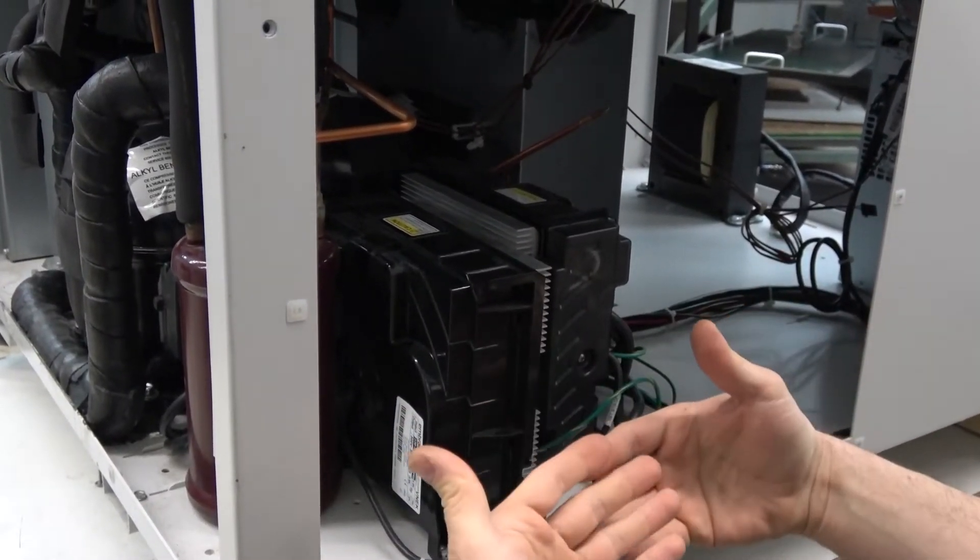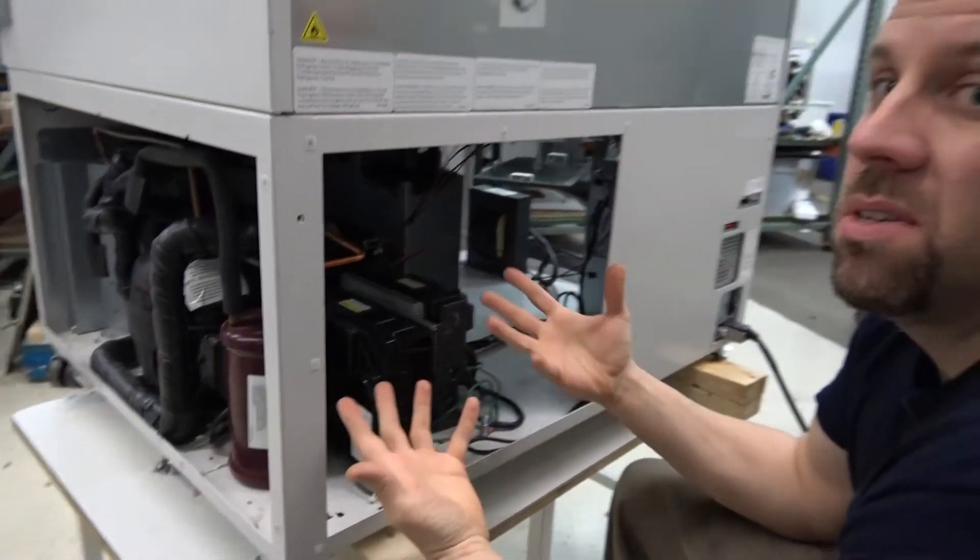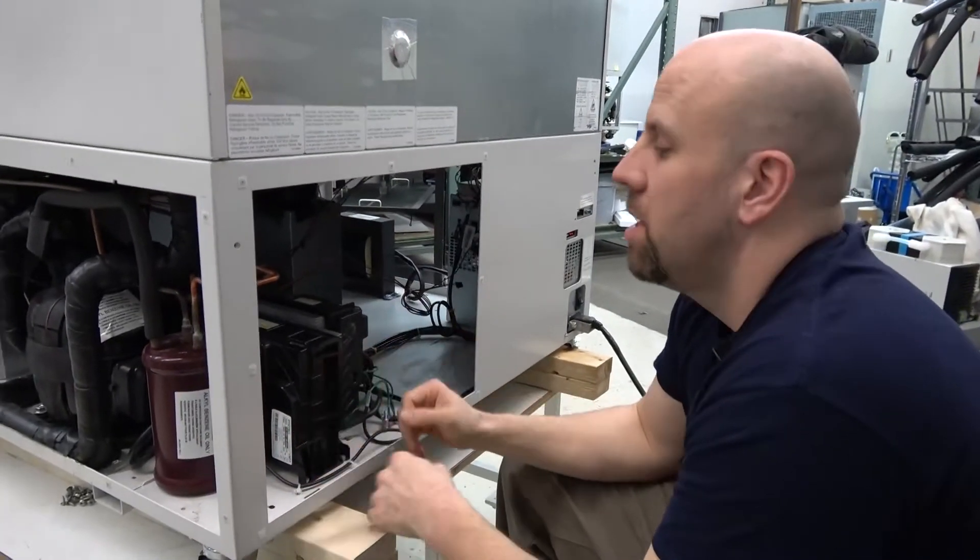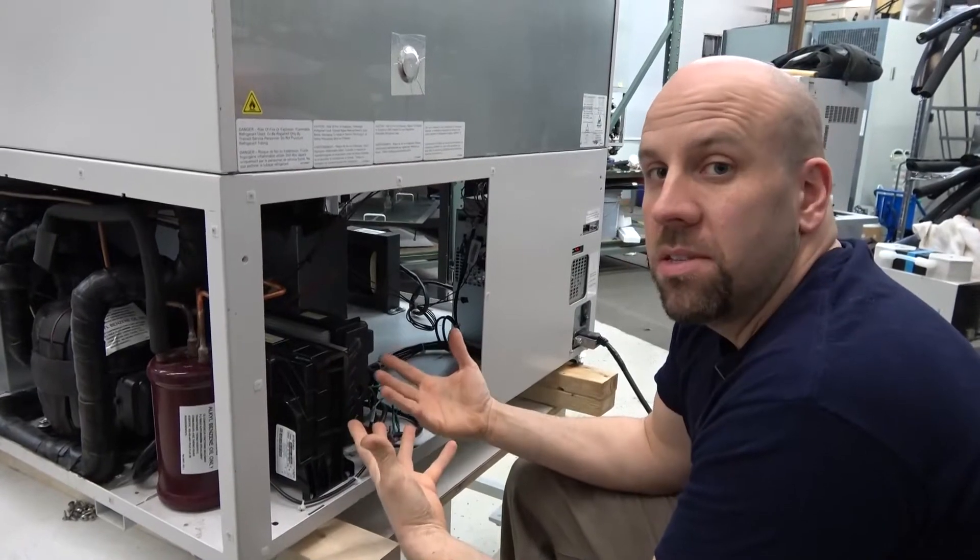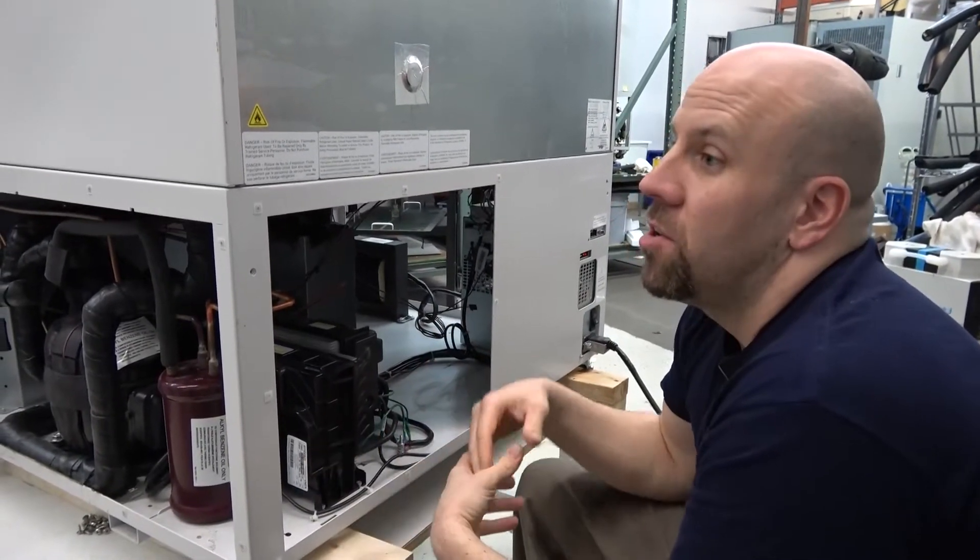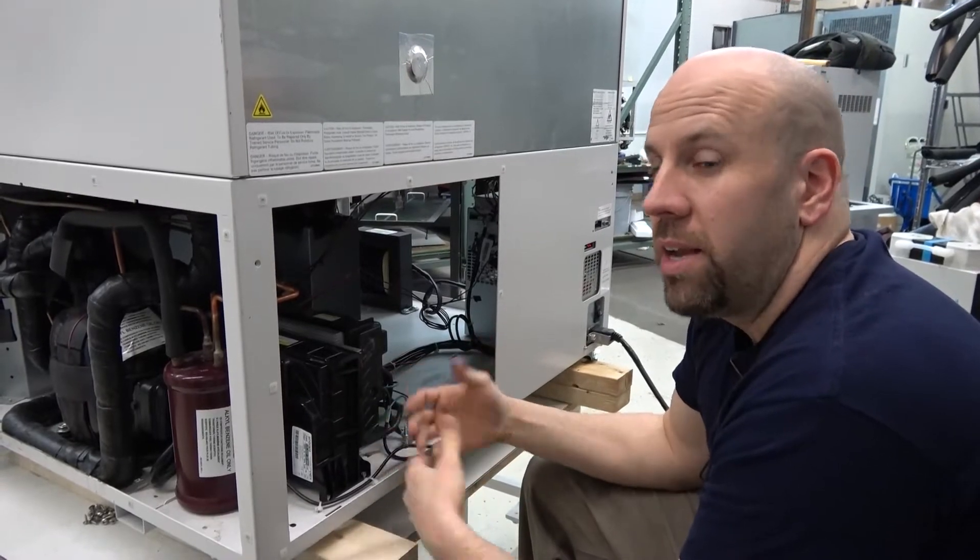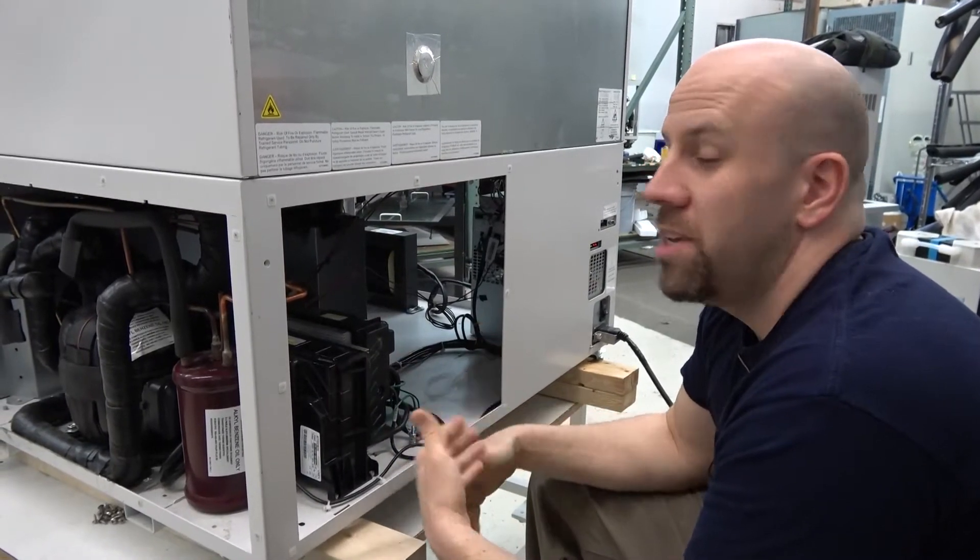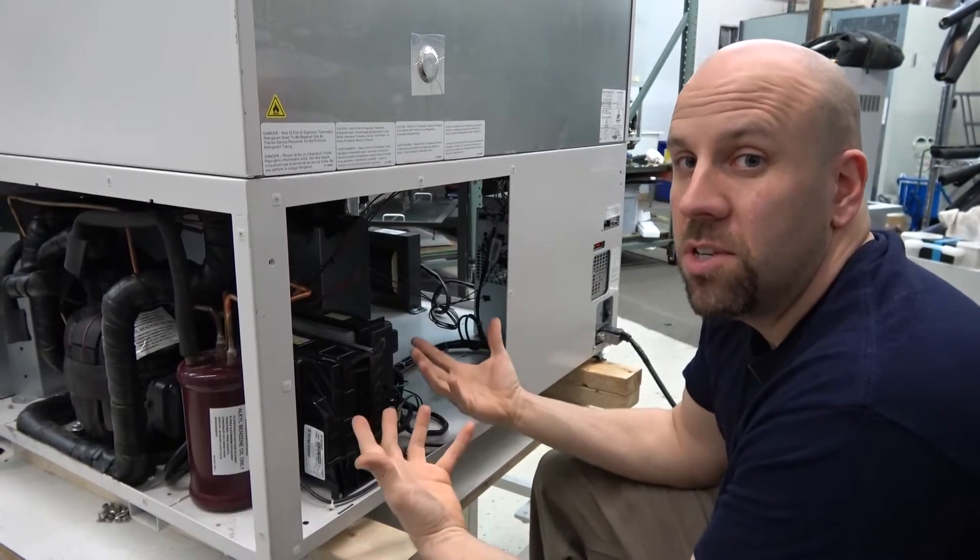So it lets you vary the speed from, let's say 2,000 RPMs up to, let's say, 4,400 RPMs, depending on the demands that you need based on room temperature and how many times you've opened the door and all that. It varies the speed of the compressor to increase or decrease the output for the situation.